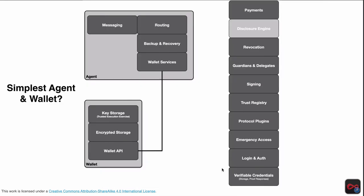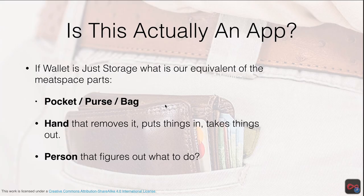Then I wanted to consider the absolute simplest agent and wallet — the bare minimum. I think it needs to do messaging, routing, backup and recovery, and then integrate a wallet with key storage and encrypted storage. That's the dumbest of dumb wallets — all other capabilities come off, and we look to other agents to build from there.